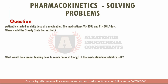A patient started on a daily dose of a medication. The medication's volume of distribution is 100 liters and the clearance is 60 liters per day. When will the steady state be reached? So I have volume of distribution and I have the clearance, so whenever I have volume of distribution and clearance, I can always get the elimination rate constant.